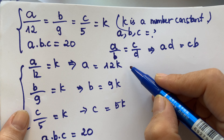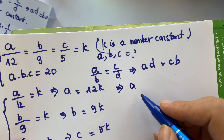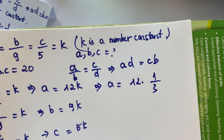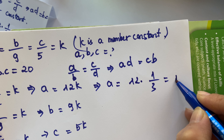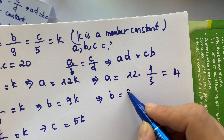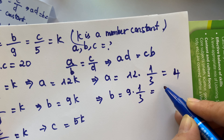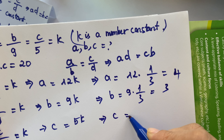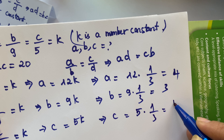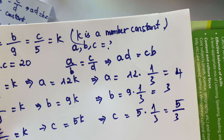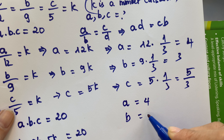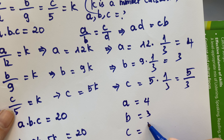Now look back: k equals 1/3. So a equals 12 times 1/3, which equals 4. Next, b equals 9 times 1/3, which equals 3. And the last one, c equals 5 times 1/3, which equals 5/3. So the answers are: a equals 4, b equals 3, and c equals 5/3.